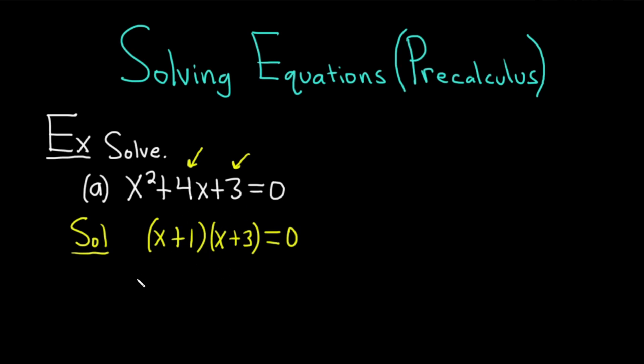Whenever you have a product equal to 0, you can set each factor equal to 0. So we have x plus 1 equals 0 or x plus 3 equals 0. So here we get x equals negative 1 or x equals negative 3. These are both solutions to this equation.